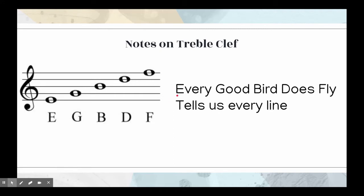The second saying is, Every Good Bird Does Fly, tells us every line. Try that with me. Here we go. Every Good Bird Does Fly, tells us every line. And those stand for the first line E, second G, B, D, and F. You might know another saying for either of these. Whatever helps you remember it is great. All you need to know is the names of the lines and spaces.